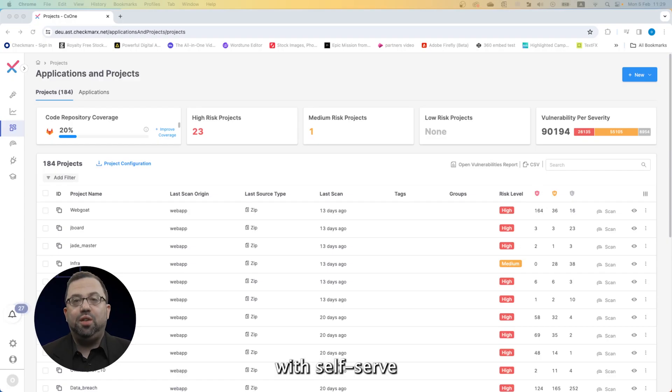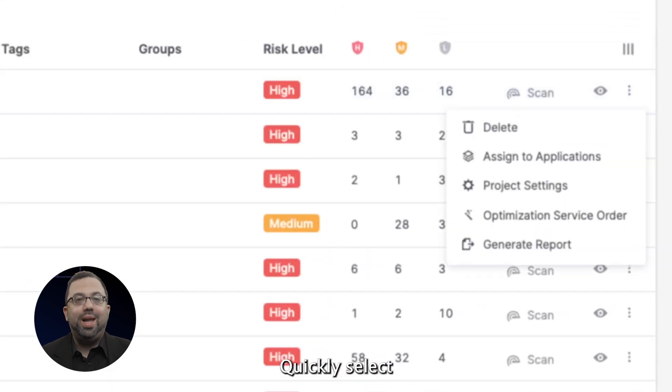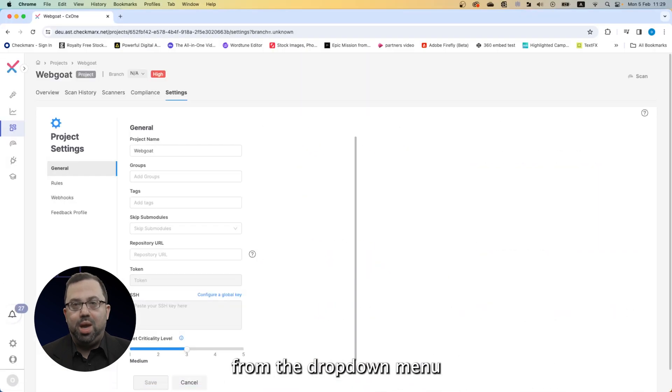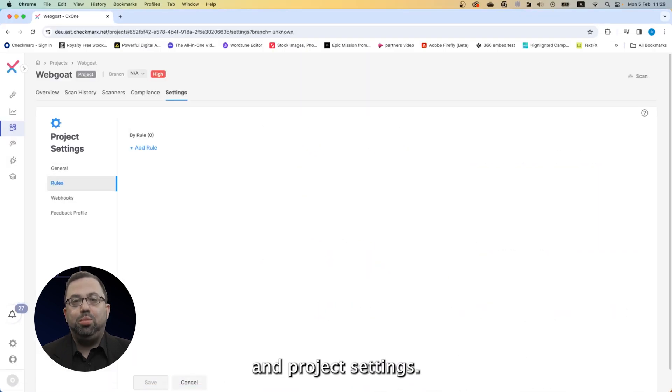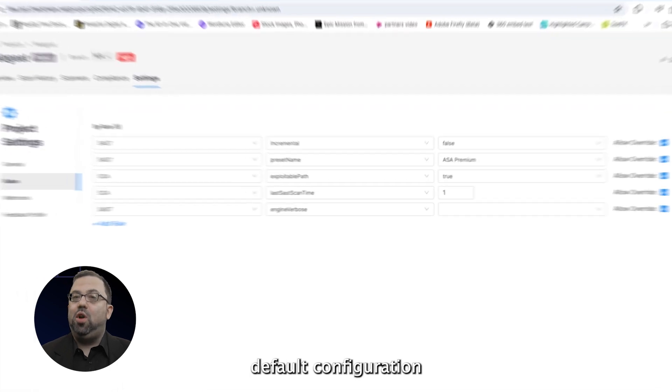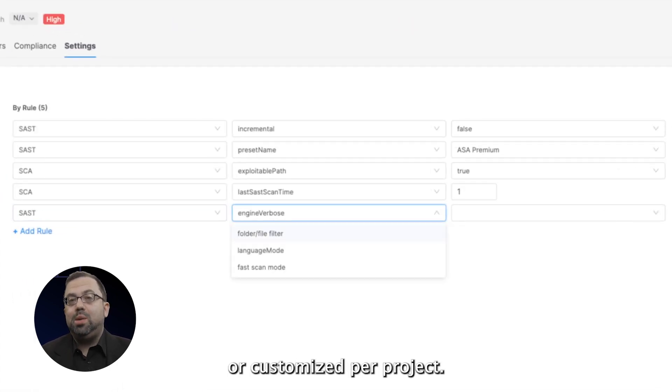One, just opt-in with self-serve to the new engine. Quickly select it through the platform from the drop-down menu inside the account settings and project settings. It could be a default configuration or customized per project.